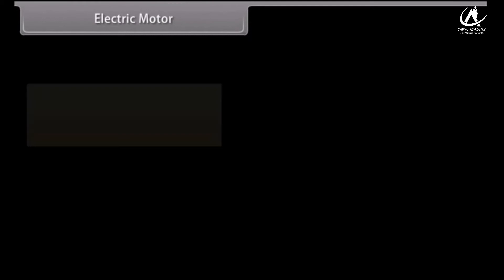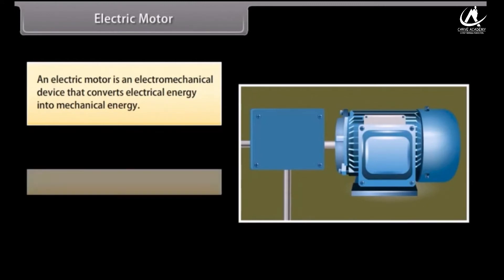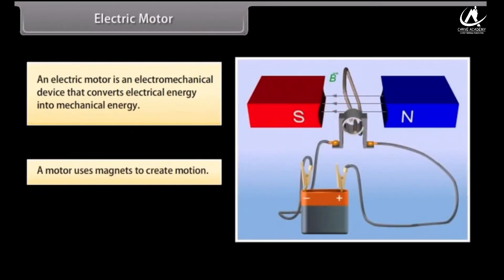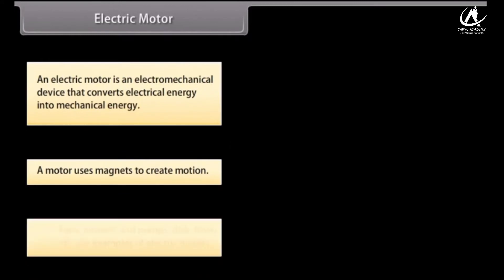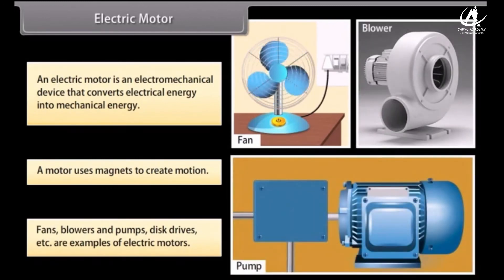Electric Motor. An electric motor is an electromechanical device. It converts electrical energy into mechanical energy. Let us look at how electric motors work. A motor uses magnets to create motion. Inside an electric motor, the attracting and repelling forces of a magnet create rotational motion. Fans, blowers, pumps, and disc drivers are some examples of electric motors.